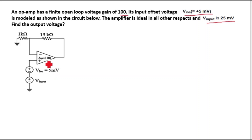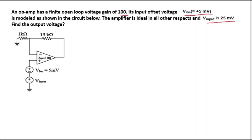In the circuit you can see the open loop voltage gain of 100 is given, VIOS is 5 millivolt, and V input is 25 millivolt. First we will understand the condition of the output when offset voltages are given.